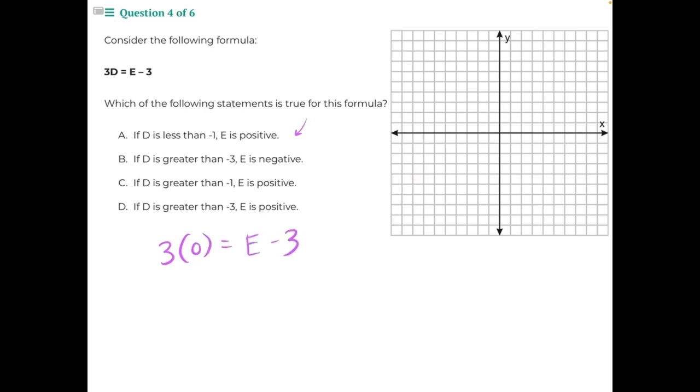To start, we need to resolve our parentheses. 3 times 0 would give us 0 equals e minus 3. 3 is being subtracted from e, so we need to do opposite operations to balance the equation and isolate the variable. This will cancel out and give us 0, leaving behind e. 0 plus 3 will give us 3. So our e intercept is 3. When d is 0, e is 3.